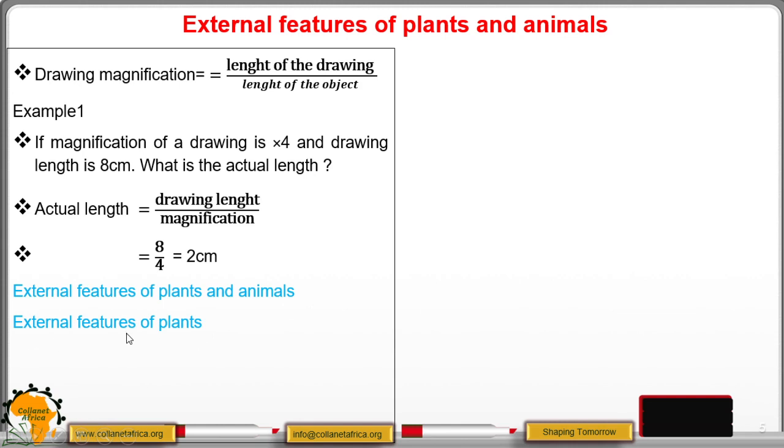We will begin with those external features of plants. We have what we call rhizoid and seta in moss plants. In form three we shall look in detail how these moss plants look like.